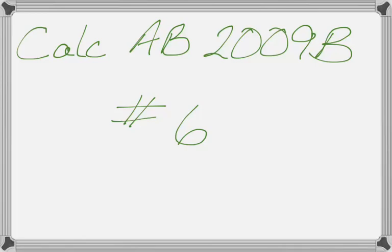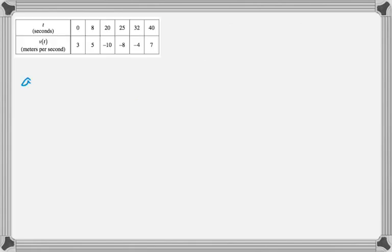Alright, this is problem number 6 from 2009 B of the Calc AB exam, and it's a table problem. So, first thing we have to do is approximate the acceleration at 36 and show our calculations.